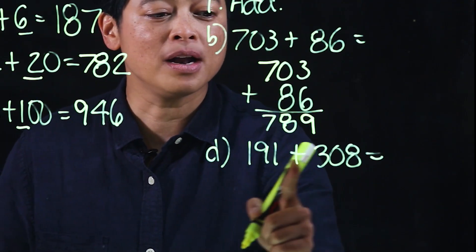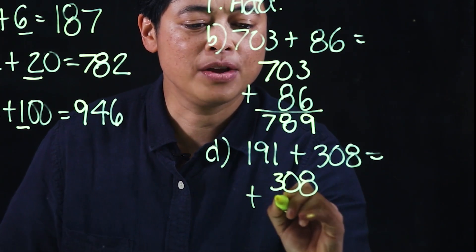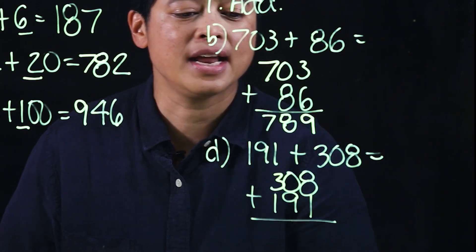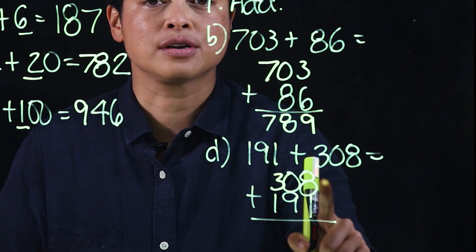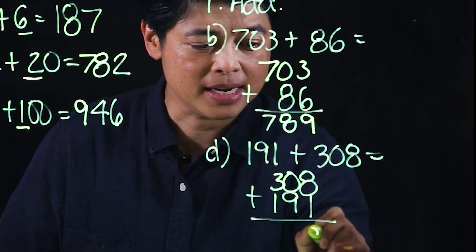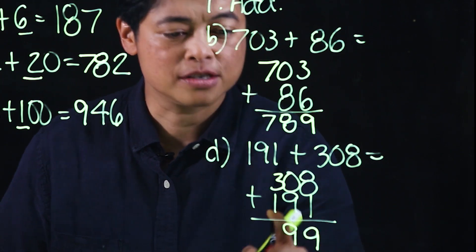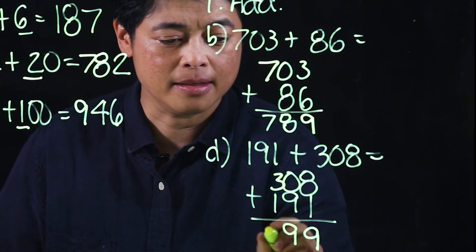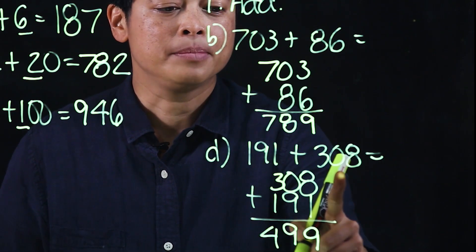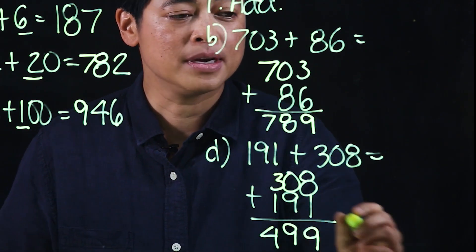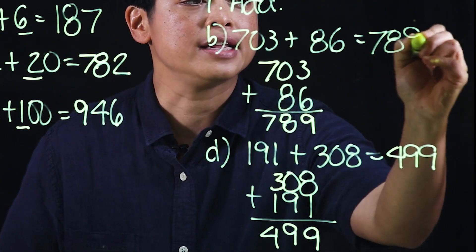This number is smaller than that one, so we write 308 first before we write 191. Again, for consistency we start with the bigger number: add makes it nine, add makes it nine, add makes it four. Therefore 191 plus 308 equals 499, and this must be 789.